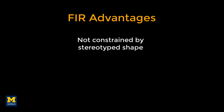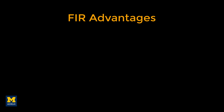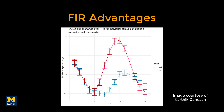Even if the shapes aren't that different from the canonical hemodynamic response function, a finite impulse response analysis can be useful in determining aspects of the response, such as the latency in the rise of the BOLD signal. For example, if we are looking at the BOLD response to auditory and visual stimuli within the superior temporal gyrus, the overall amplitude of the BOLD response to the auditory stimuli is greater compared to the visual stimuli — a predictable effect that would be captured by an analysis using the canonical HRF.